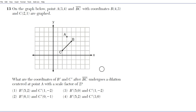We're trying to dilate this segment about point A. The goal is to cause the resulting figure to be twice as large. We look at the slope triangles: from A to B you fall one and run one, and from A to C you fall three and run one. All you have to do is double these slope triangles to find the endpoints B prime and C prime.